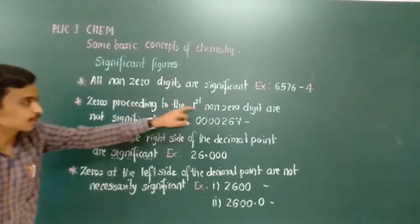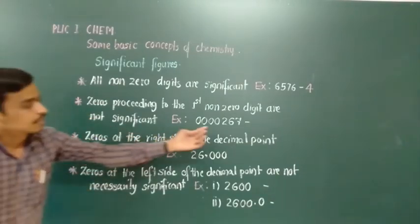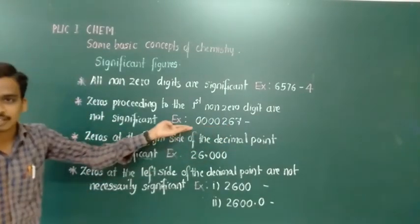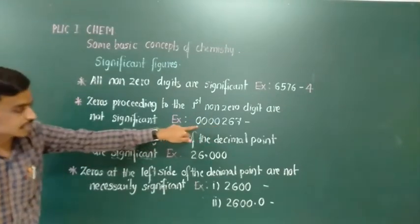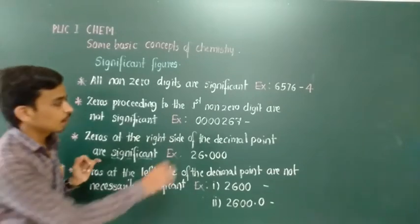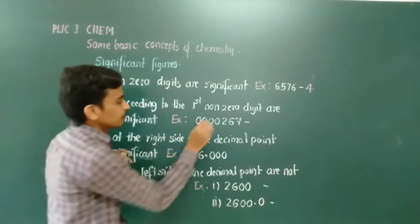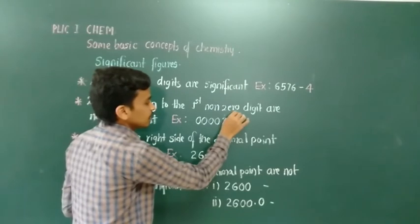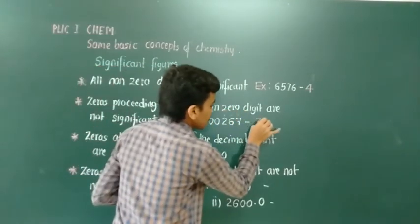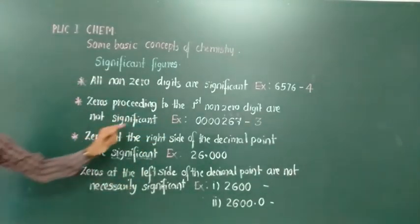The second rule is: zeros preceding the first non-zero digit are not significant. Those leading zeros are not useful in chemistry and are not counted toward the total number of significant digits. So for a number with four leading zeros before three non-zero digits, the total number of significant digits is only 3.